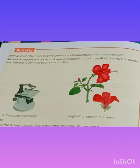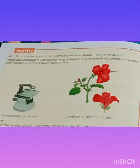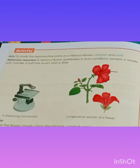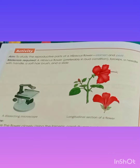The fifth question is: name the male and female parts of a flower. The male part of a flower is called androecium, whereas the female part is called gynoecium. The sixth question is: what is the function of the calyx? The main function of the calyx is to protect the flower in the bud stage, and it can also prepare food for the plant.